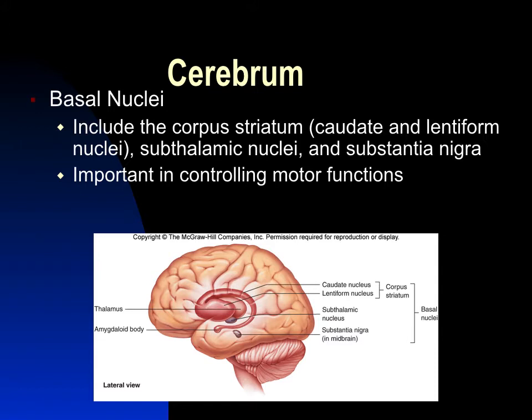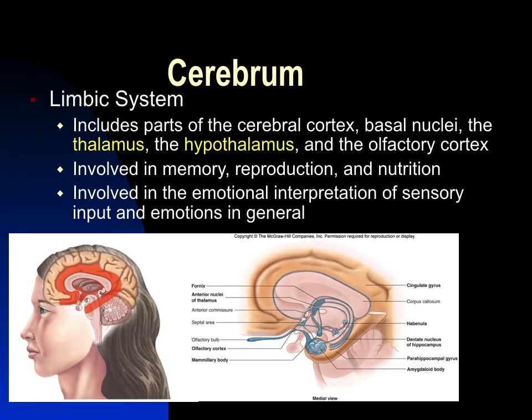The basal nuclei not only control motor function but are also part of the limbic system. Together with other parts of the cerebral cortex in the frontal lobe, and the diencephalon — the thalamus and hypothalamus — they are involved in memory, reproduction, emotional interpretation of sensory input, and emotions in general.